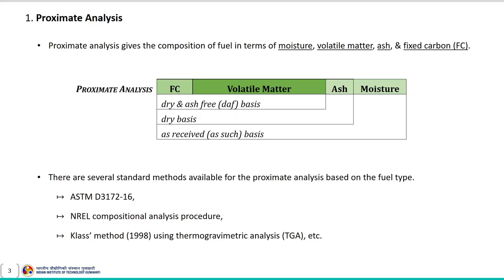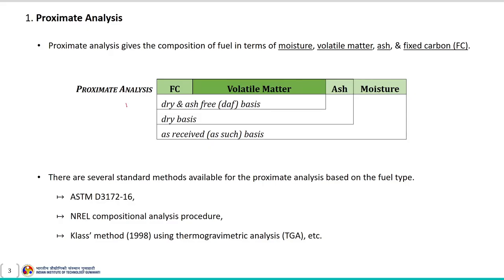Proximate analysis is used to measure the composition of a fuel in terms of fixed carbon content, volatile matter, moisture and ash content. This proximate analysis can be expressed in the following ways. It is presented on a dry and ash-free basis, which mainly includes the fixed carbon content and the volatile matter content of a given fuel. On a dry basis, it includes the ash content.